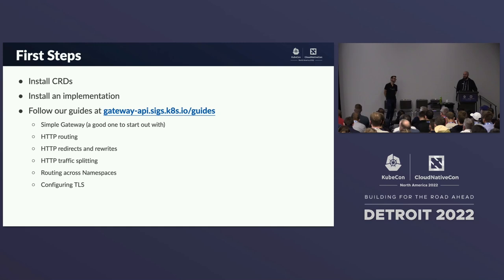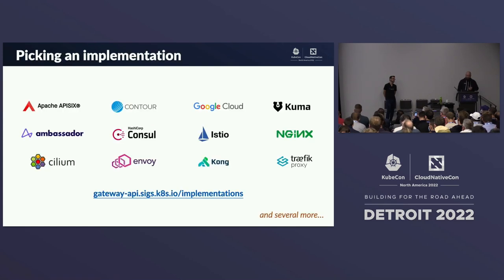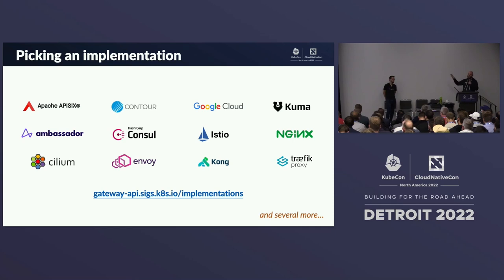To get started: deploy the CRDs, pick an implementation, and follow our guides — they all work pretty much the same. You'll deploy a Gateway, create HTTPRoutes, and attach them as we showed. Here are several great implementations available on our website under Gateway's implementations page — pick the one that's right for you and our guides will walk you through the rest.